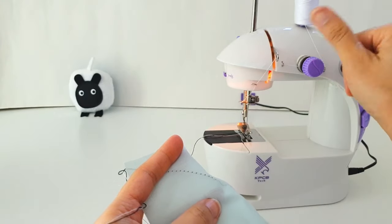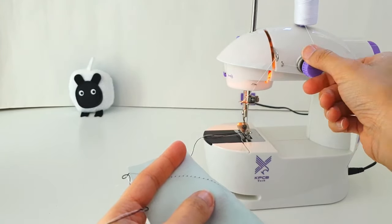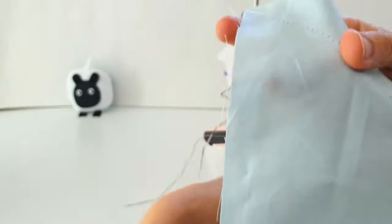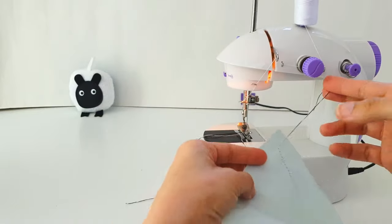So just like you open a bottle cap, you're going to turn it this way. So you're going to make it looser. And now we're going to try sewing another stitch line and see how that goes.